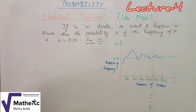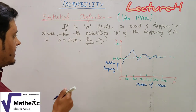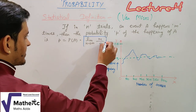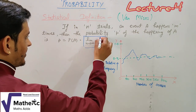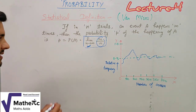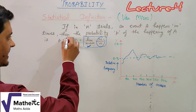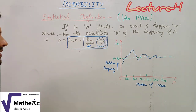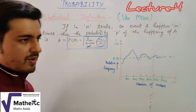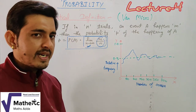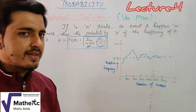What is the probability of event A according to the statistical definition? In the classical approach we simply said m upon n. Now in the statistical definition, the probability of A is equal to the limit as n tends to infinity of m upon n, where n is the total number of trials and m is the number of favorable outcomes.